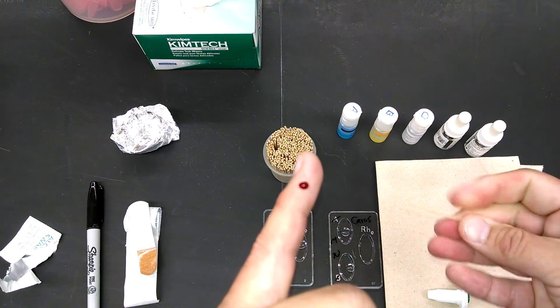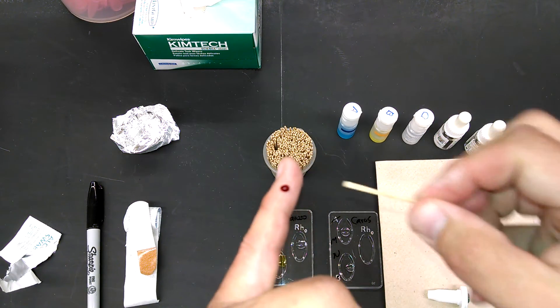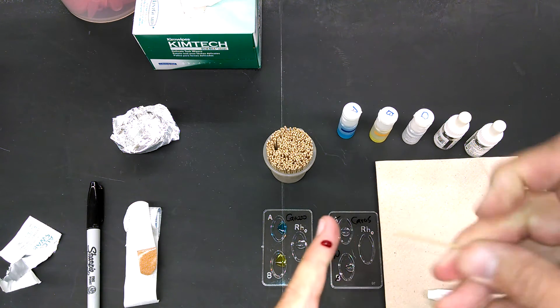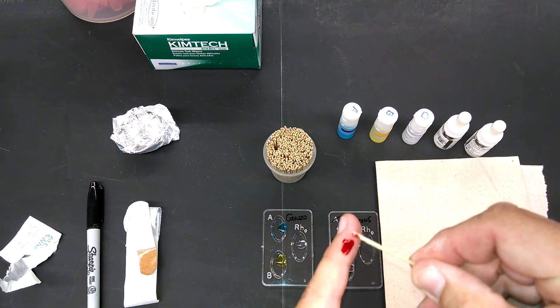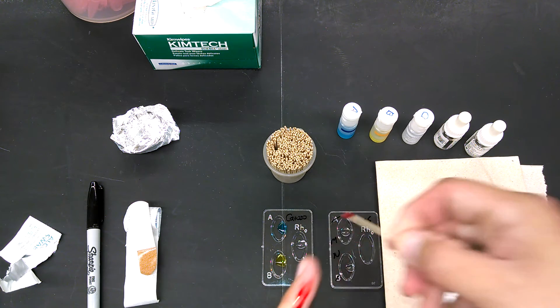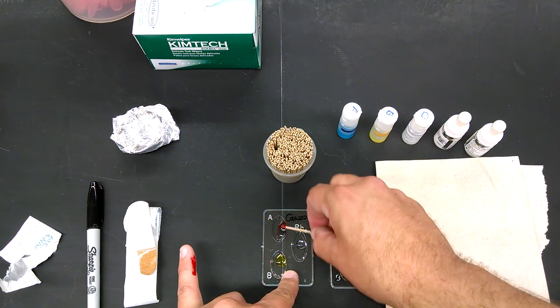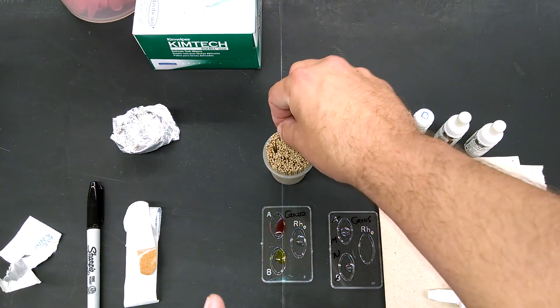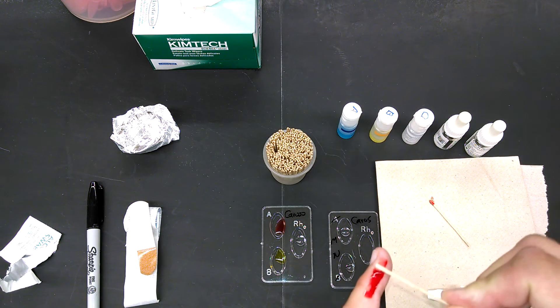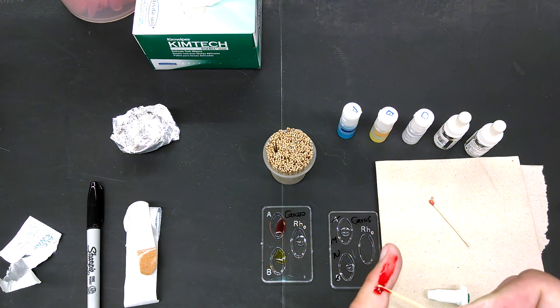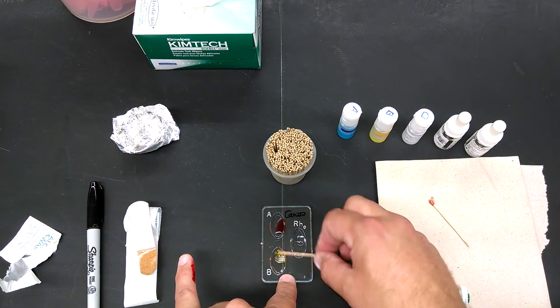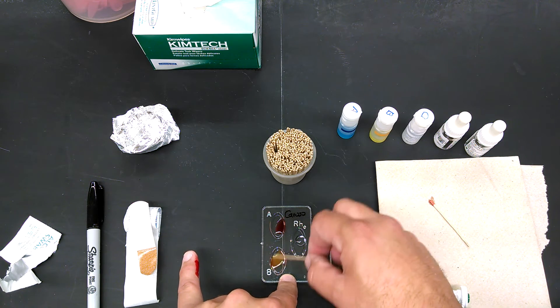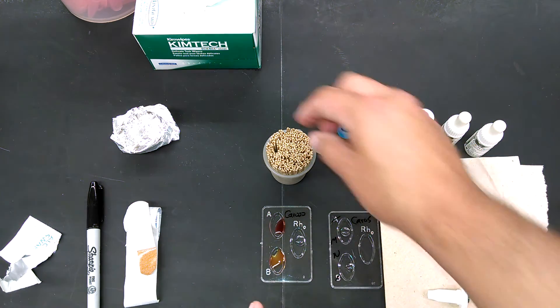Take a toothpick. You're going to use a new one every time. You're going to scoop some of it up and swirl it around in the antibodies. You need enough that you can see it, but not too much. And then a new one. If all you can see is a tiny amount, you won't be able to see a reaction.